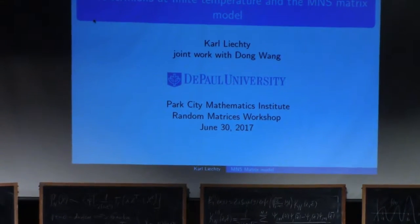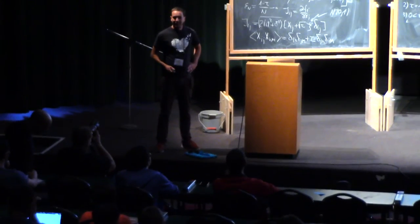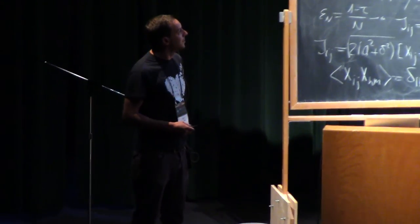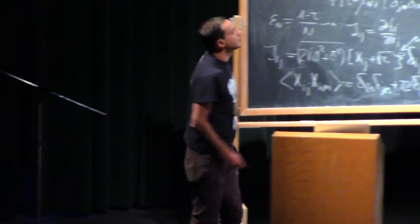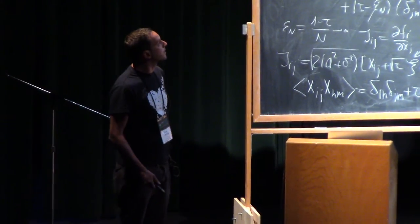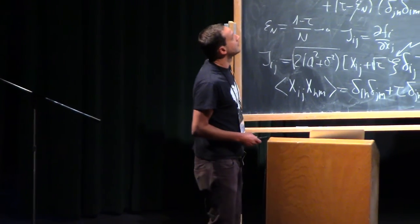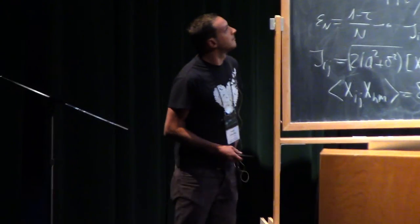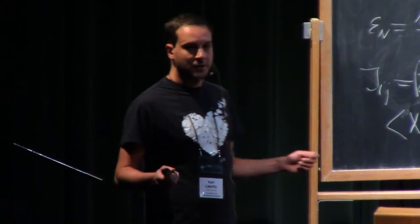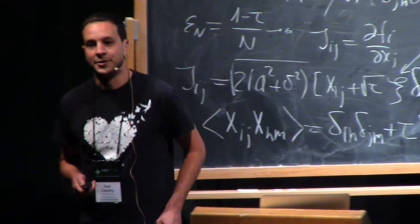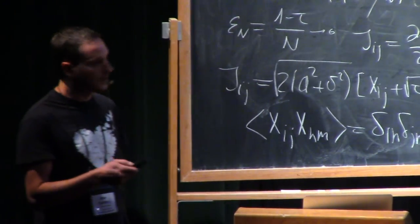Thank you, Ivan, and the rest of the organizers as well. I'm very happy to be able to be here and give a talk — it's a great conference. I'll talk about some recent joint work with Dong Wang, who is here, on a model that can be thought of as a one-dimensional model of fermions, but also as a finite temperature version of the GUE, the Gaussian Unitary Ensemble.